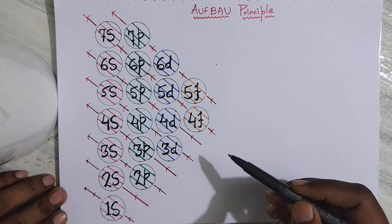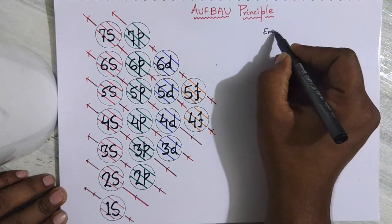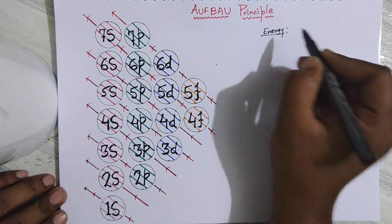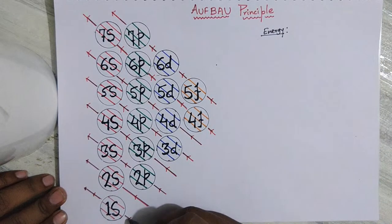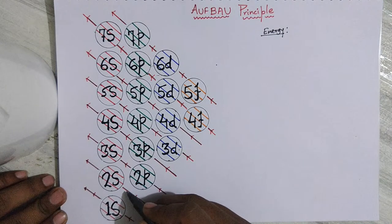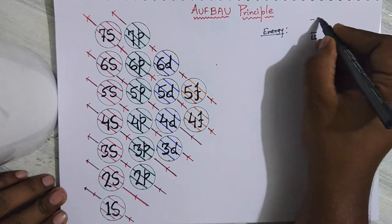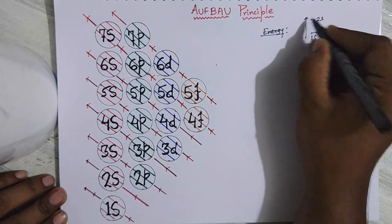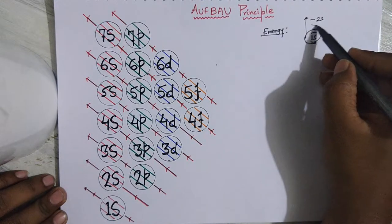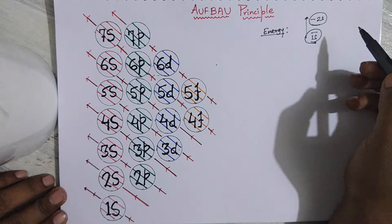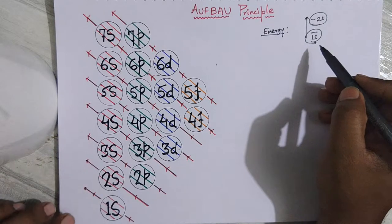The Aufbau principle is purely based on the amount of energy needed to fill an electron in an orbital. When we say the 1s orbital fills first and then the 2s orbital, it means the 1s orbital is lower in energy than the 2s orbital. This means you need a lesser amount of energy to fill electrons in 1s compared to the energy required to fill electrons in 2s.